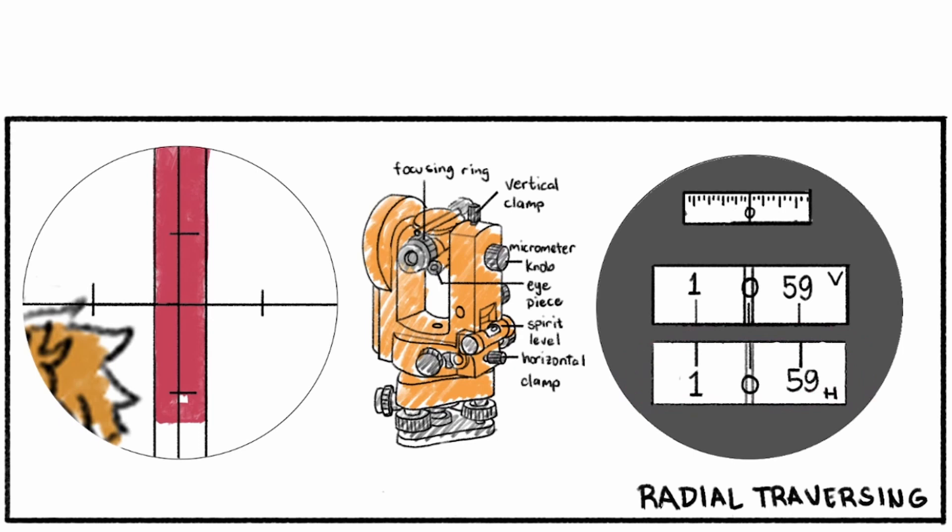So at this point, both horizontal and vertical scales are at zero reading. Tighten the horizontal clamp to make sure the telescope remains aligned to point A when we move the range pole.